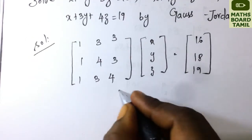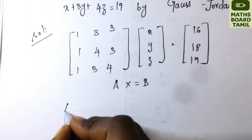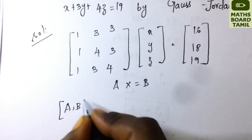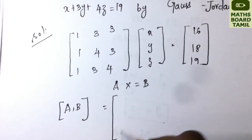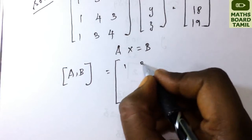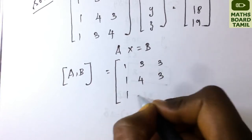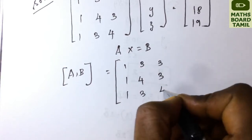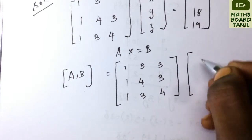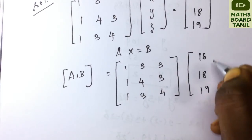We write this in A·X = B format. To solve, we combine A and B into an augmented matrix [A|B]: 1, 3, 3 | 1, 4, 3 | 1, 3, 4 with B matrix values 16, 18, 19.